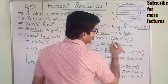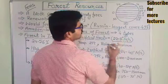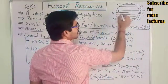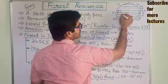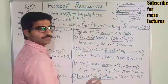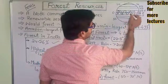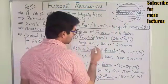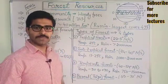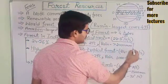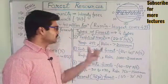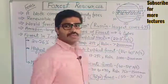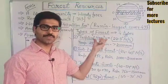Tropical forests are found between 23.5 degrees north and south of the equator — this region is known as the tropical region, and the forests found here are tropical forests. The average temperature here is about 27 degrees, and the rainfall is maximum, more than 2000 millimeters. These are the environmental characteristics of this region, and the forest here is tropical forest. We can classify this further into tropical evergreen forest and tropical deciduous forest.